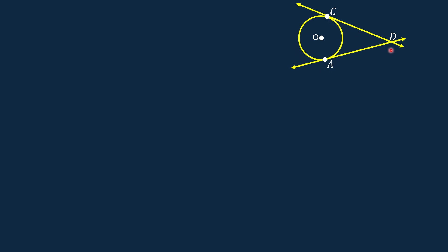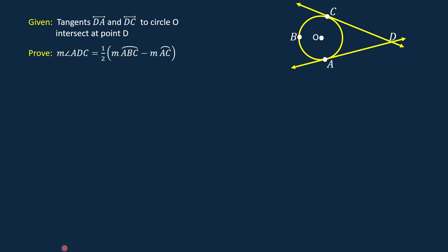And point D is in the exterior of the circle. Let us have another point on the circle; let us name this point, point B. This is angle ADC. This is arc ABC, and this is arc AC. We are going to prove this theorem using a two-column proof.